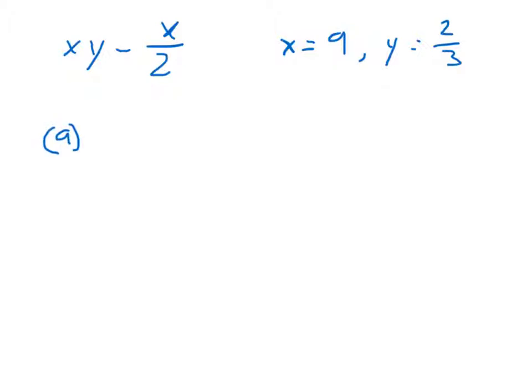So, let's rewrite this problem. I'll have 9. I'll put that in parentheses. Times 2 thirds minus 9. I'll put that in a parentheses. C over 2.